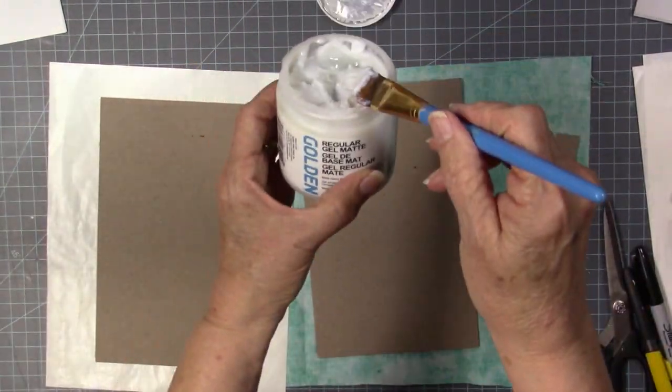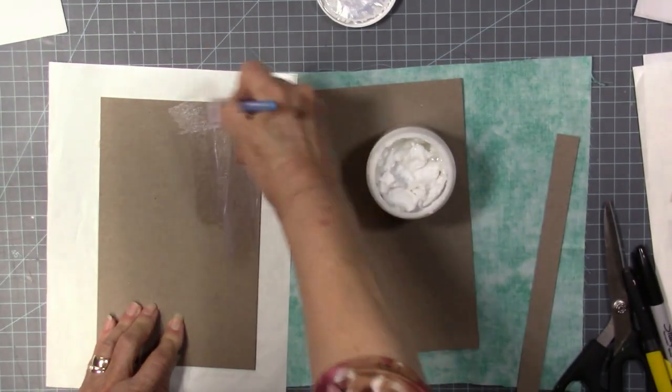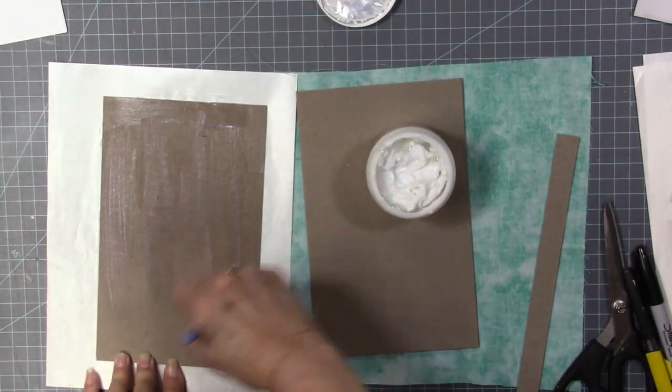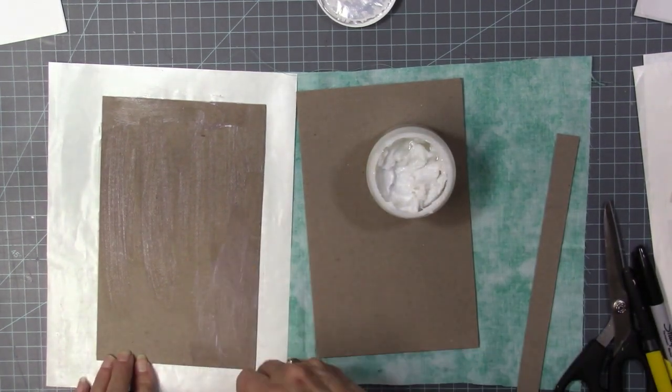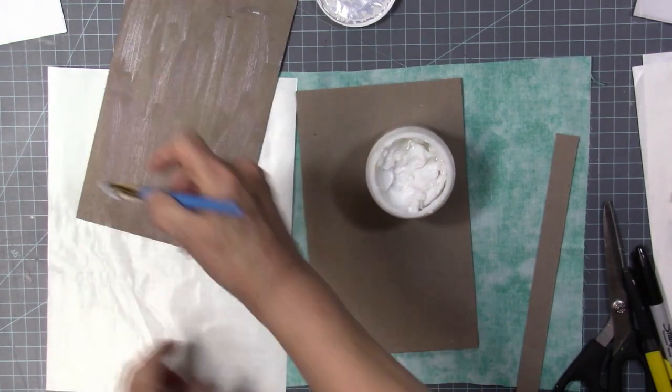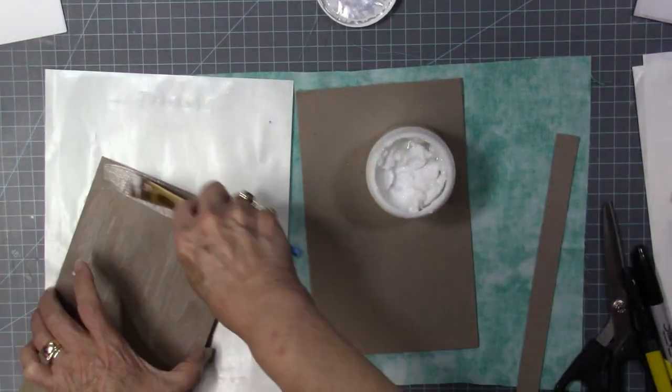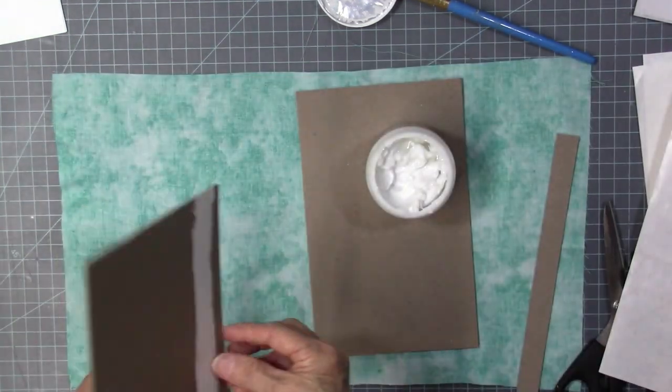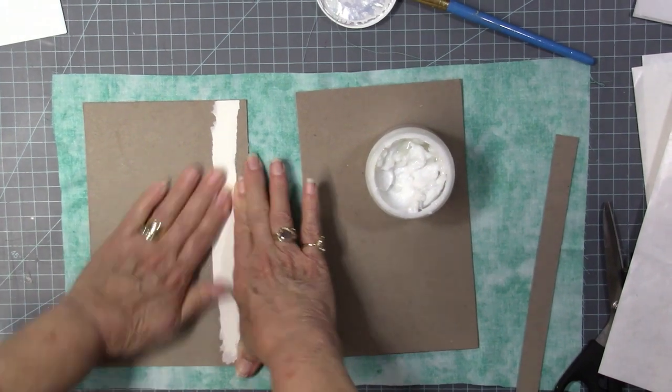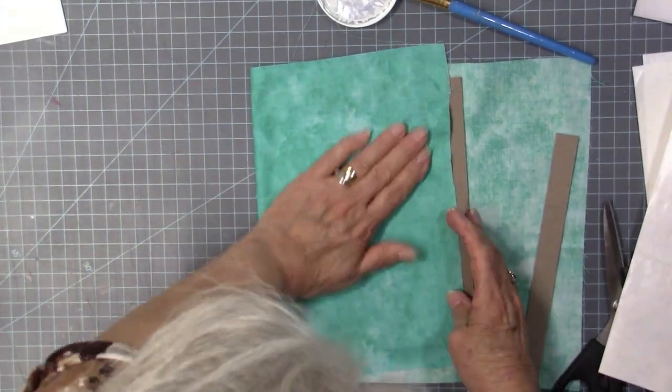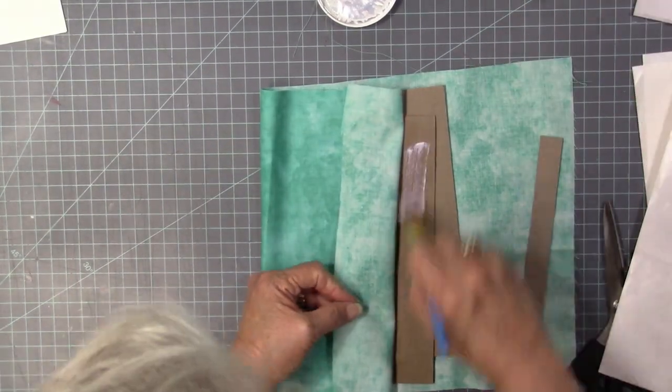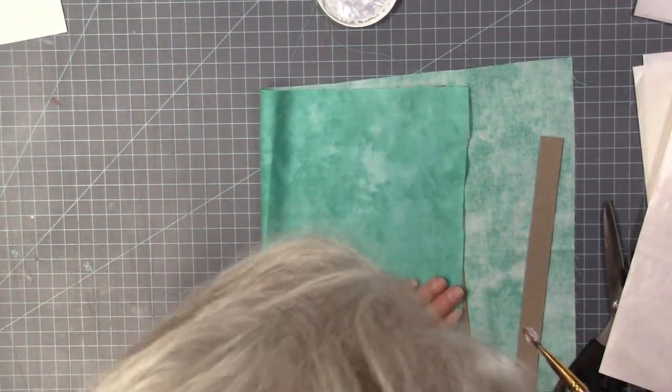I'm going to use some matte medium to adhere this to the wrong side of the chipboard. That piece of paper there is the backing of shipping labels, so it's a little bit resistant to the gluing. I save those as a glue surface to protect my other surfaces. So just a brush and then the matte medium, get a good coat on there. I'm going to have to go back and re-coat the edges just a little bit. It needed just a little touch extra to get it to stay down.